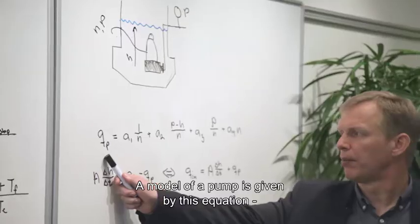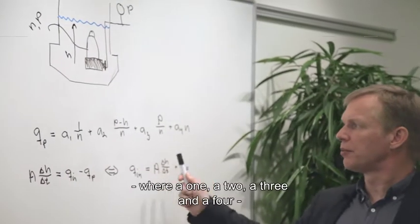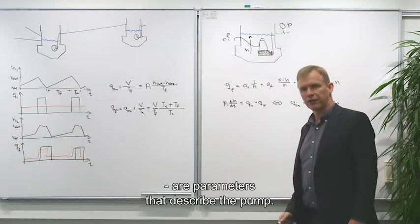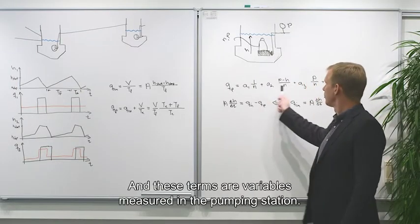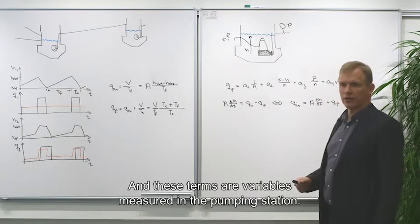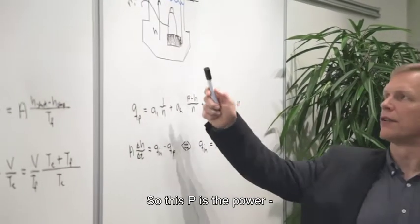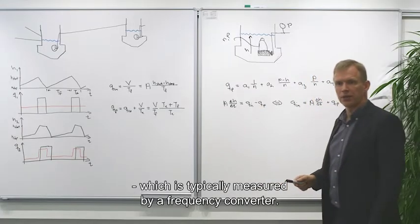A model of a pump is given by this equation, where A1, A2, A3, and A4 are parameters that describe the pump. And these terms here are variables measured in the pumping station. So this P here is the power, which is typically measured by the frequency converter.